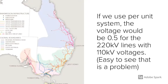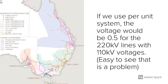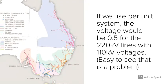It would be easier to see the problem if we use per unit system because the voltage would be 0.5 for the 220 kV lines with 110 kV voltages.